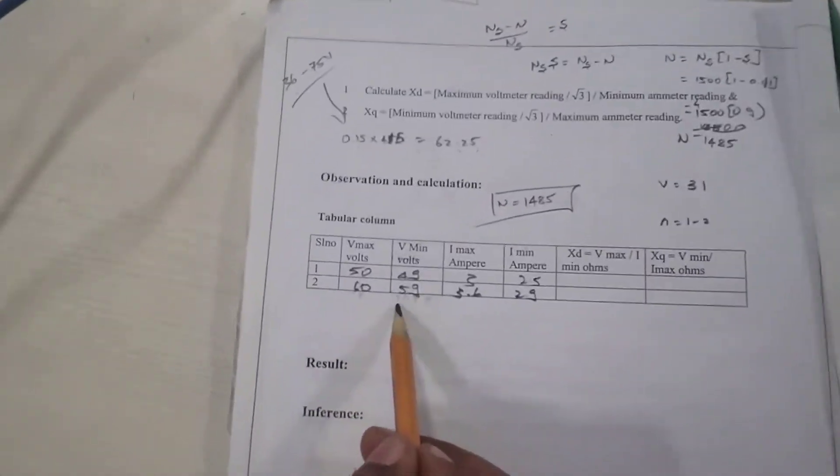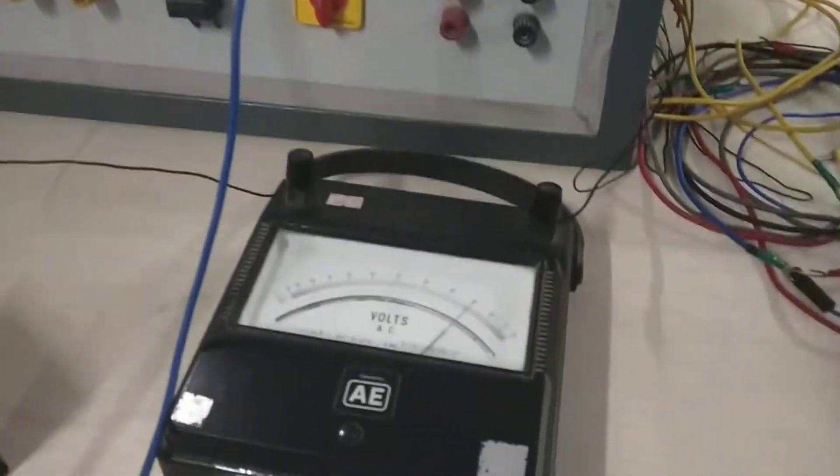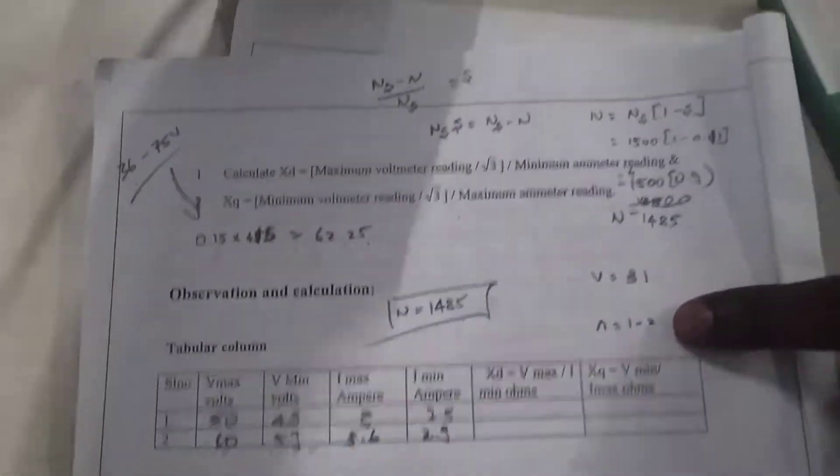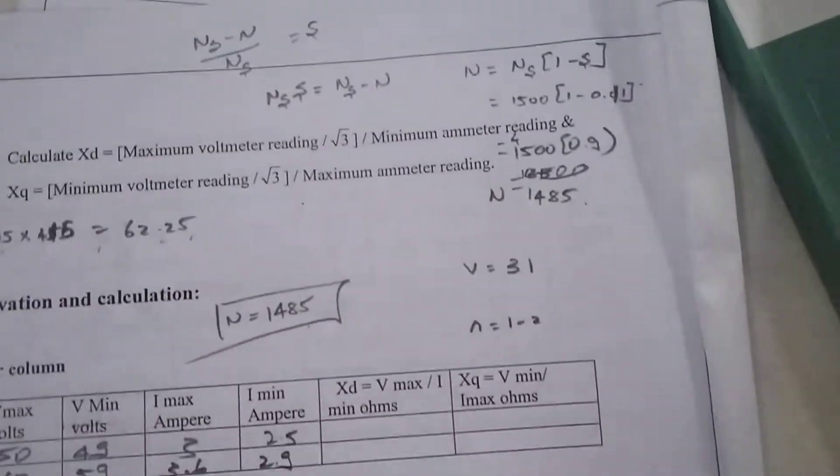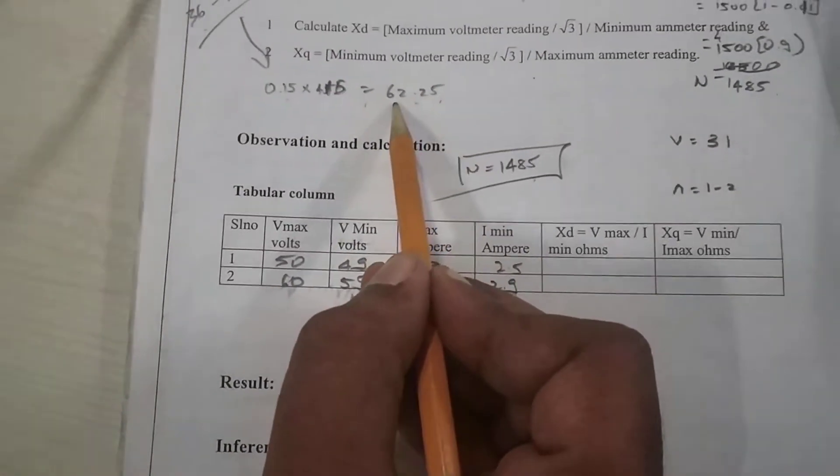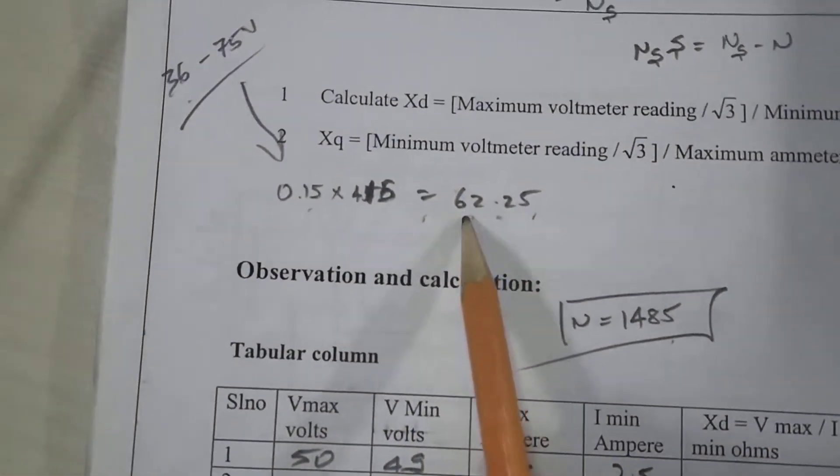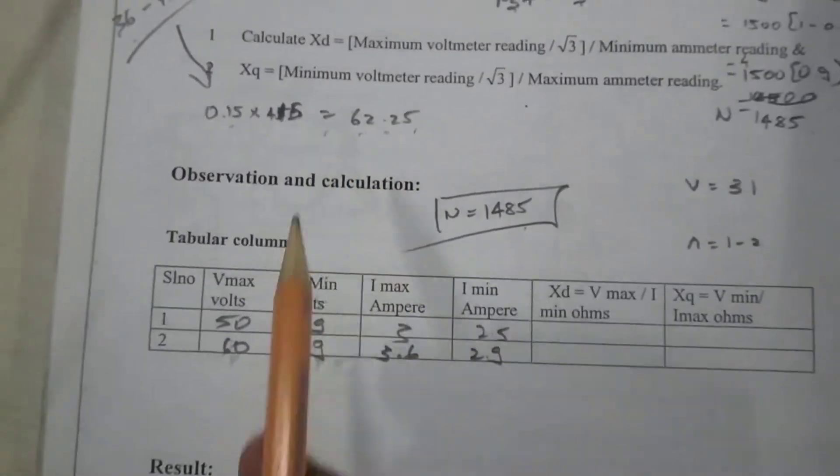Now the readings are taken. Initially when the voltage is applied to run the motor at the speed of 1485, the voltmeter will have certain voltage of around 31 volts. Now by varying this, we will take the voltage up to 15% of the rated voltage of the alternator, that is 63 volts.